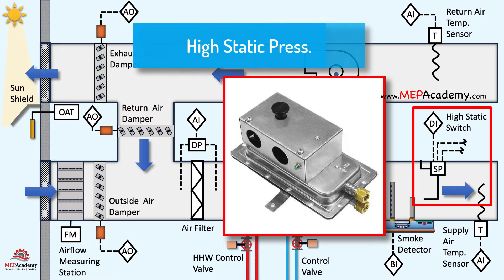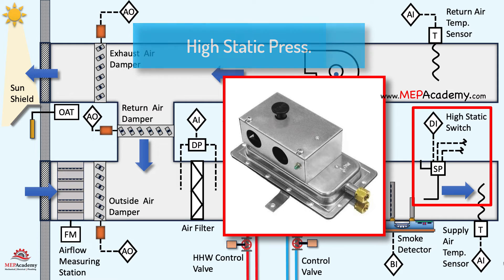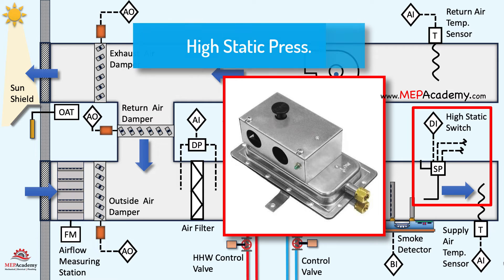High duct static pressure poses challenges in the event of a building fire when fire dampers are activated. During a fire, the closure of fire dampers results in downstream duct sensors detecting a pressure drop. Subsequently, these duct pressure sensors transmit signals to increase the air handler speed even further to restore normal operation. However, due to the closed fire dampers, the ramping up of the air handler causes an increase in duct pressure upstream of the fire dampers. This increase reaches a threshold where high static pressure switches intervene, cutting power to the variable frequency drive VFD and transmitting a signal to the DDC. Notably, switches in this specific application adhere to specifications requiring manual reset and dual outputs — one for disengaging power to the VFD and another for signaling the DDC.